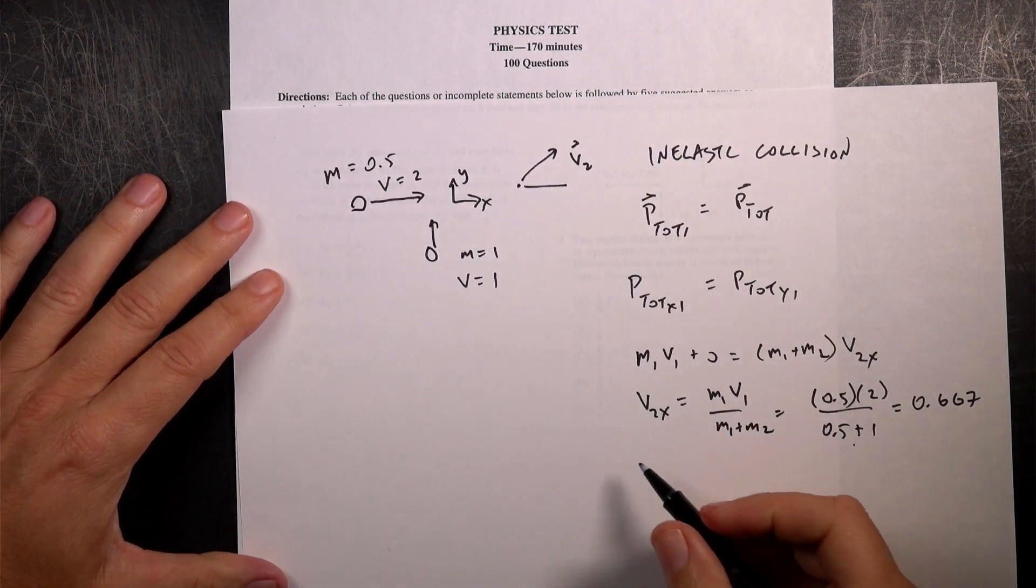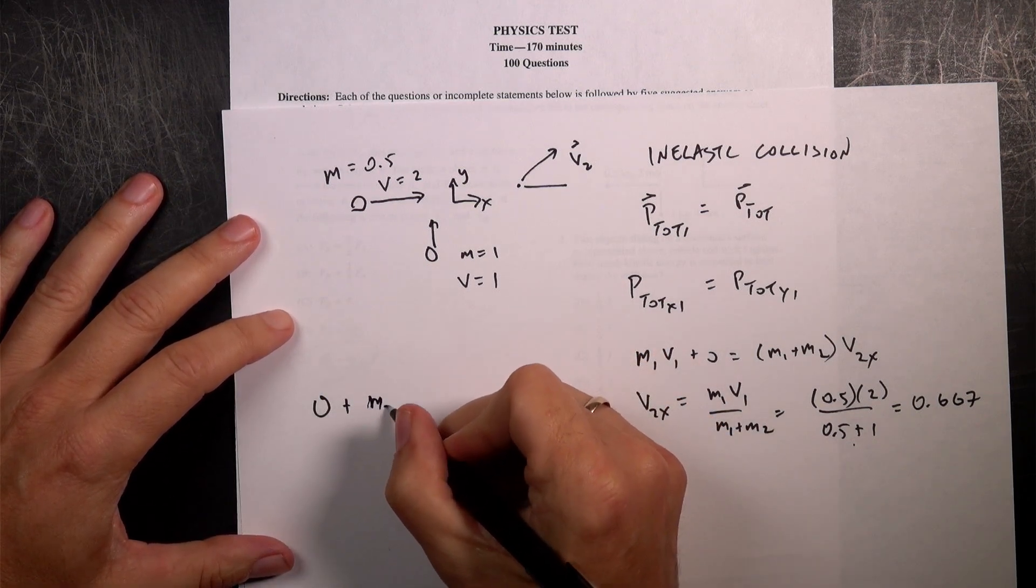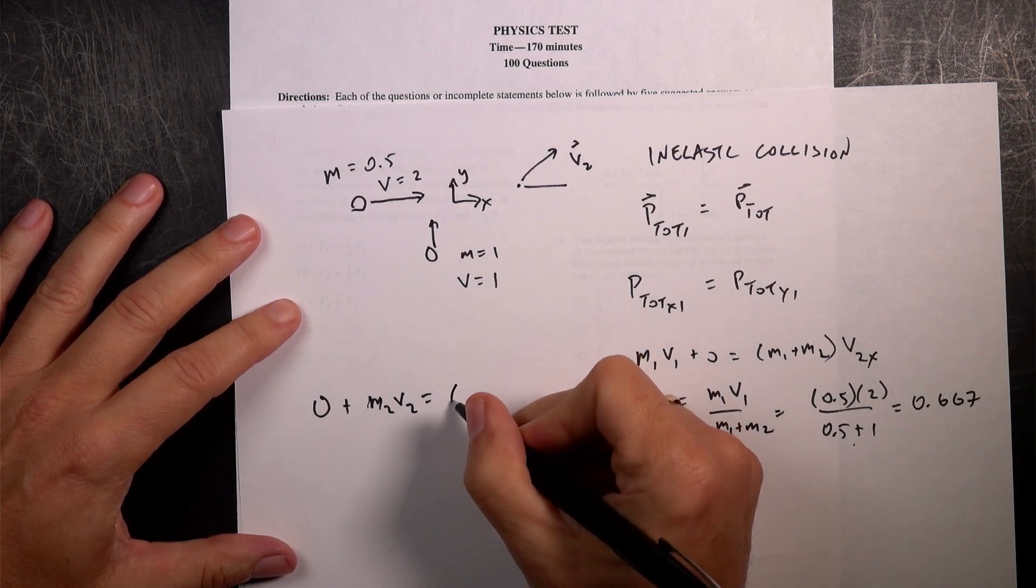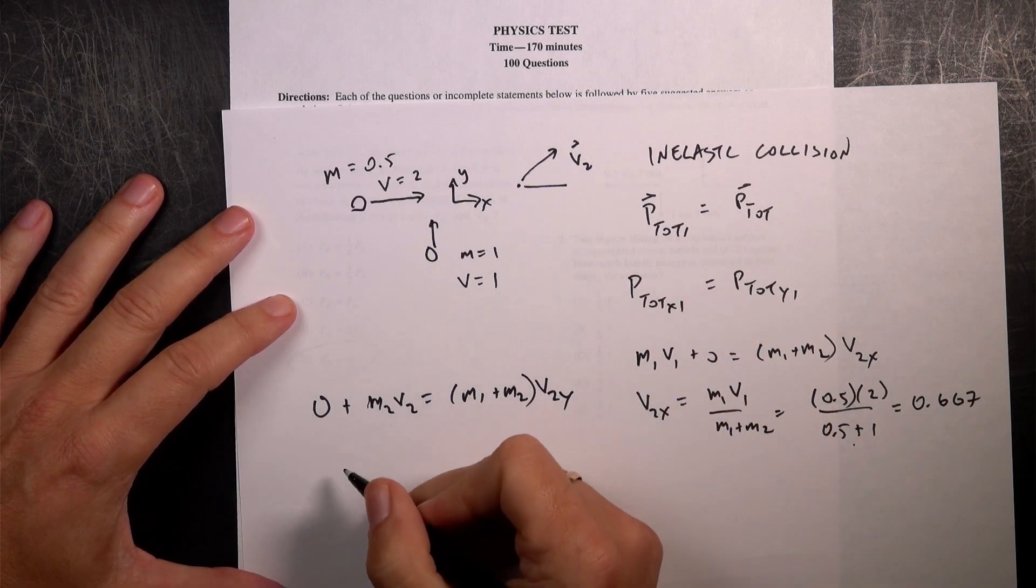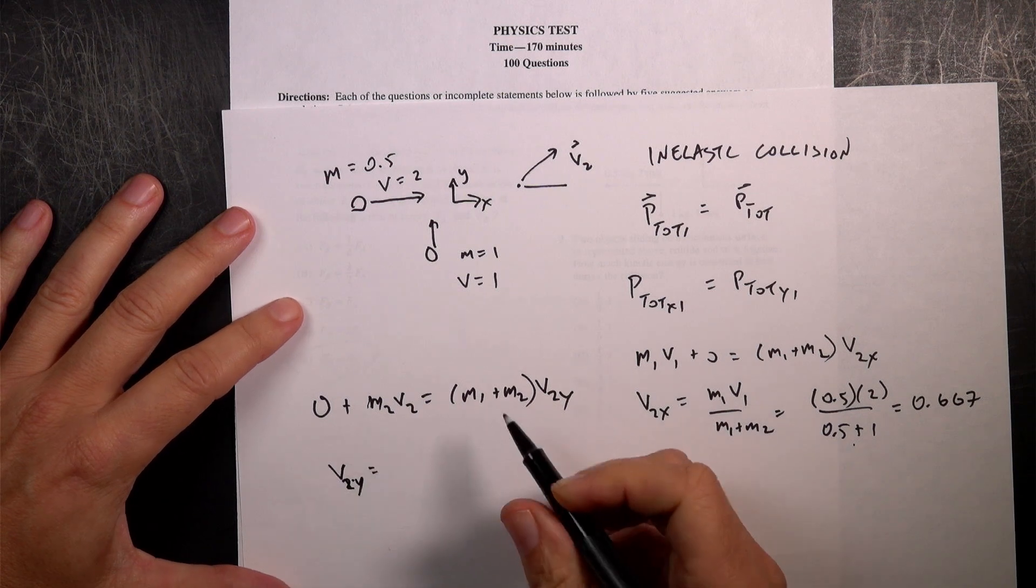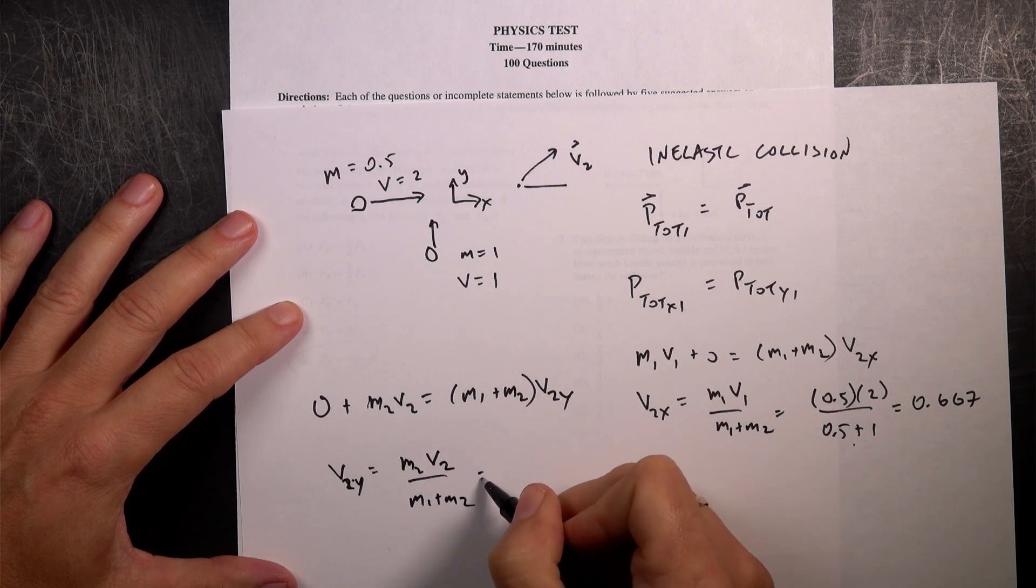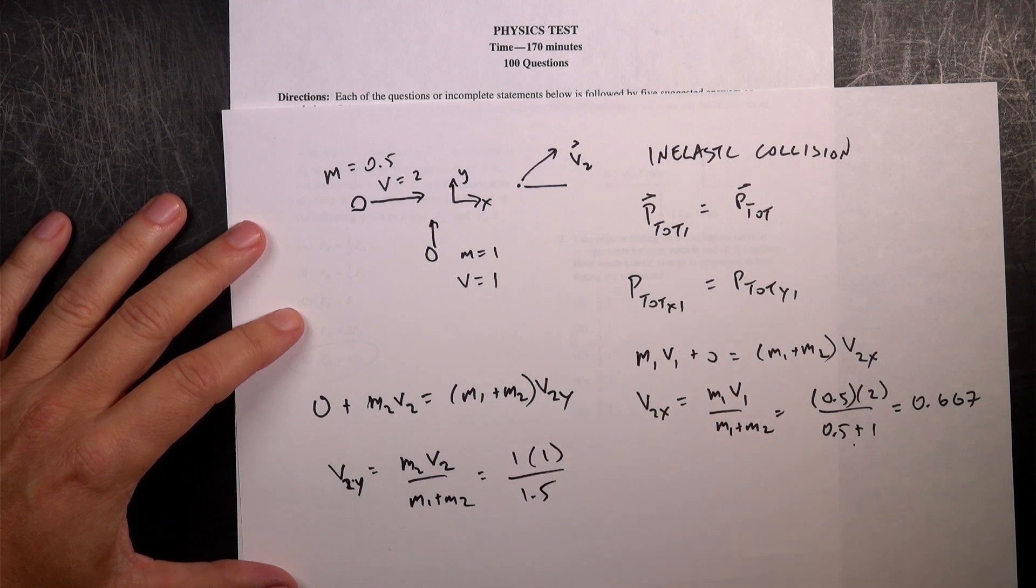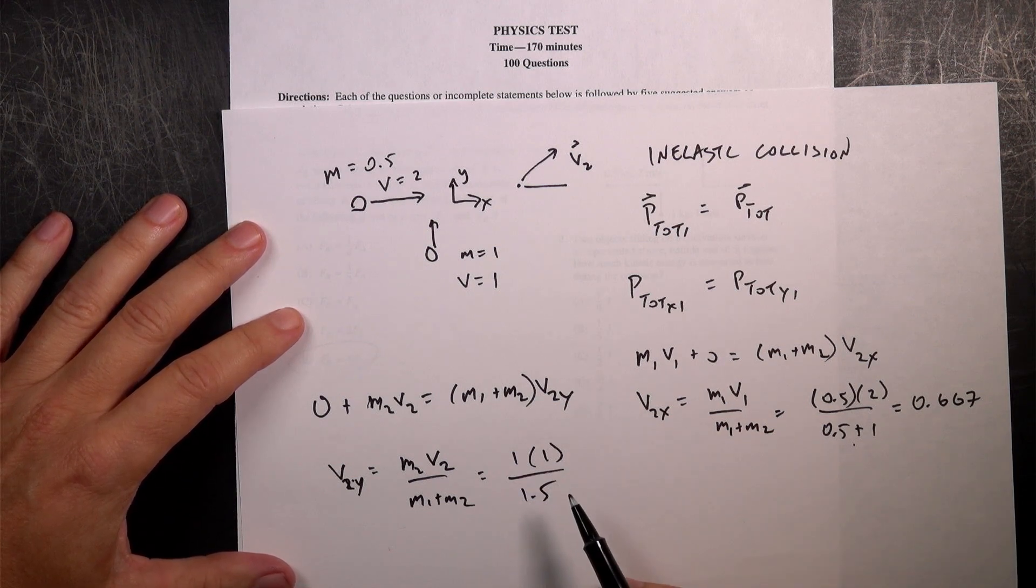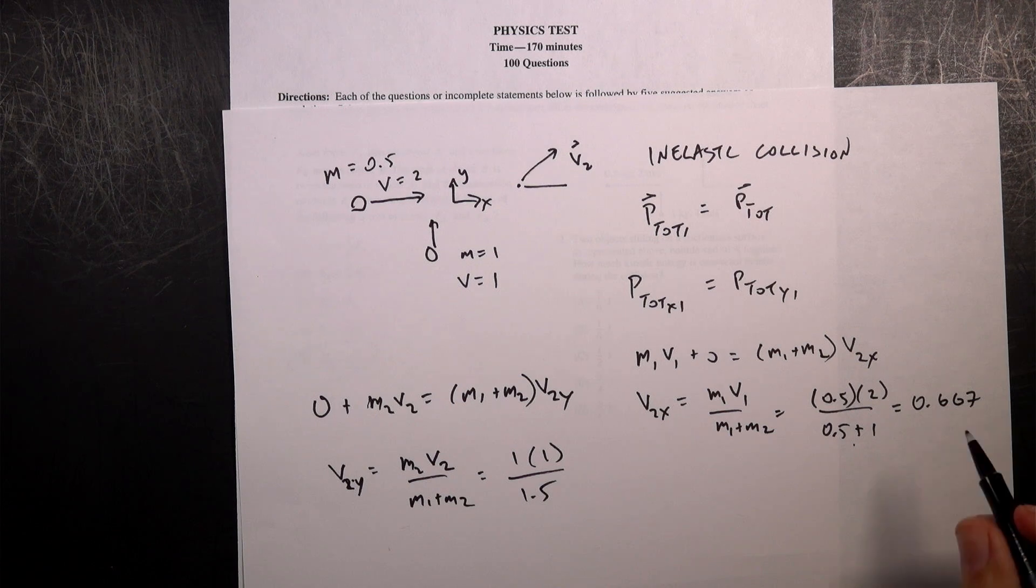Now let's do the same thing for the Y direction. So here I have 0 plus M2 V2 equals M1 plus M2 V2Y. So V2Y is going to be equal to M2 V2 over M1 plus M2. So it's going to be 1 times 1 over 1.5. So that's the same thing. So this is 2 thirds, right? Yeah. So this is 2 thirds.